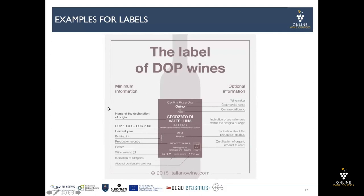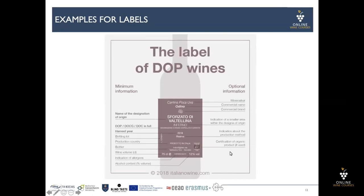This is the minimum information required on a wine label: the name of designation of origin, the harvest year, the bottling lot, the production country, the bottler, the wine volume, the indication of allergens, and alcoholic contents. The optional information includes: winemaker, commercial name, commercial brand, indication of a smaller area within the designation of origin, indication about the production method, and indication of organic product if used.